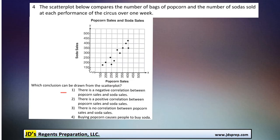Choice number one says that there's a negative correlation between popcorn sales and soda sales. And that's definitely not true because a negative correlation means that as one thing increases, the other thing decreases. And we can see from the data that that's not happening.